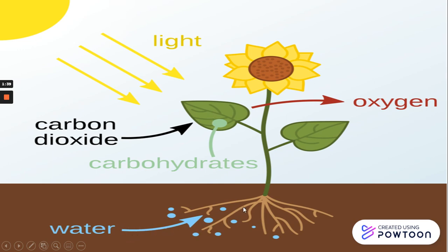فيه water جاي من تحت من الروots للستام وصل للليف. فيه water في الليف والليف بياخد carbon dioxide — ثاني أكسيد الكربون من برا — يحطوه مع الواتر. عايزين طاقة عشان يبدأوا يصنعوا؟ يجبوها من sunlight. دلوقتي أخدت الطاقة اللي تخليني أصنع — عندي carbon dioxide وعندي water، ابدأ أصنع الاكل.